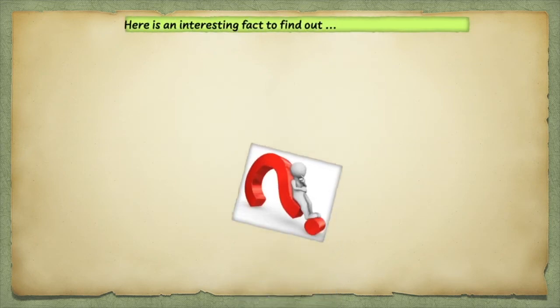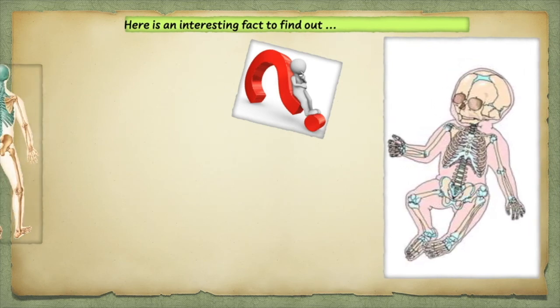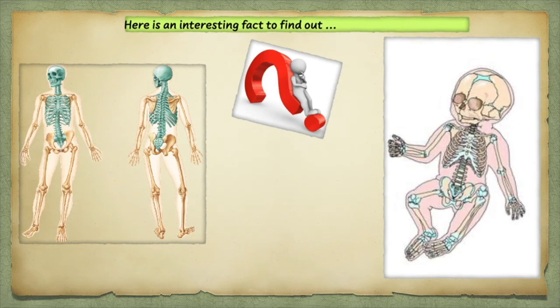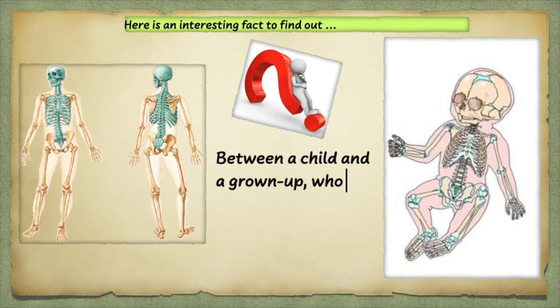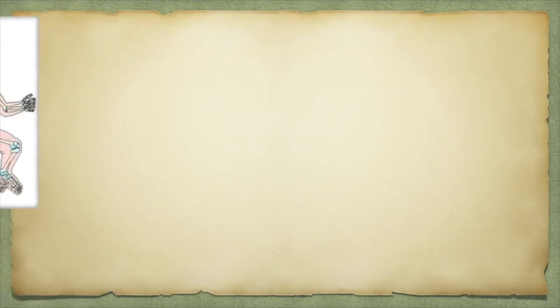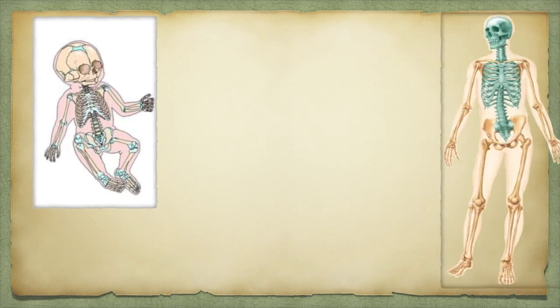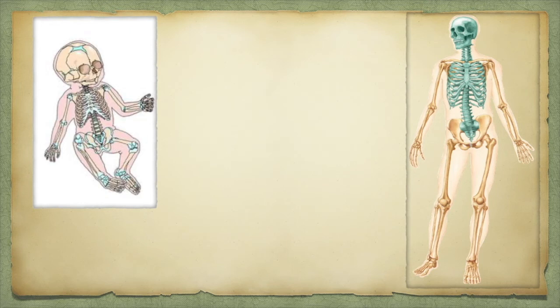Here is an interesting fact to find out. Between a child and a grown-up, who has more bones? A baby has between 300 and 350 bones. An adult has about 206 bones. As we grow older, various bones fuse — this means that they join or merge into single bones. Use the internet to find out more interesting facts about the human skeleton. Share your findings with other learners, your friends at home and in school, your family members, and people in your community.